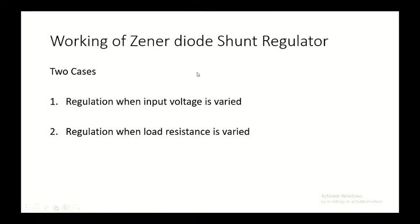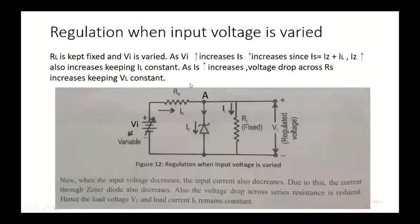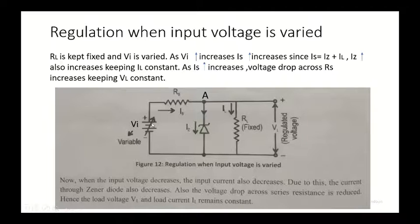The working of the Zener diode shunt regulator has two main cases. First, we must maintain a constant output even when there is a change in input voltage — that is regulation when the input voltage is varied. Second, we must maintain a constant output even when there is a change in the load resistance — that is regulation when the load resistance is varied.